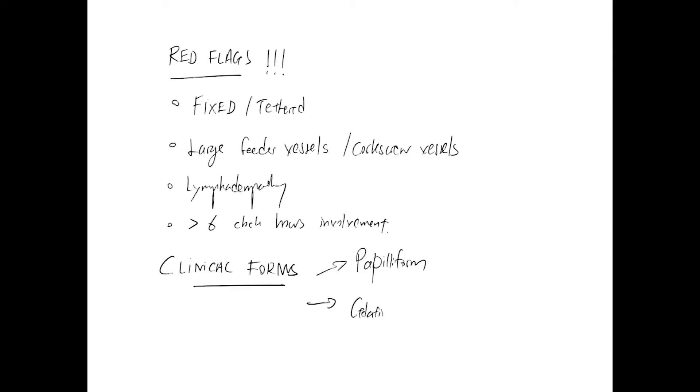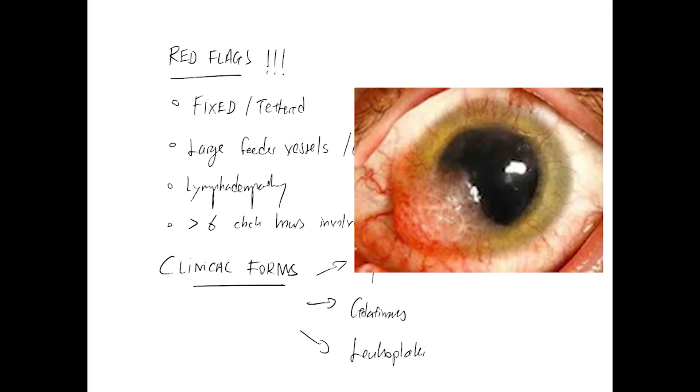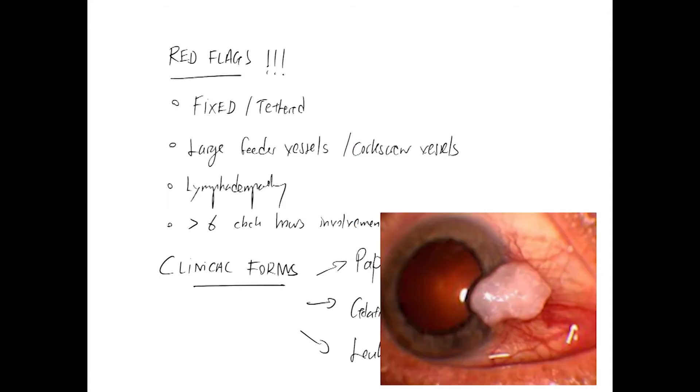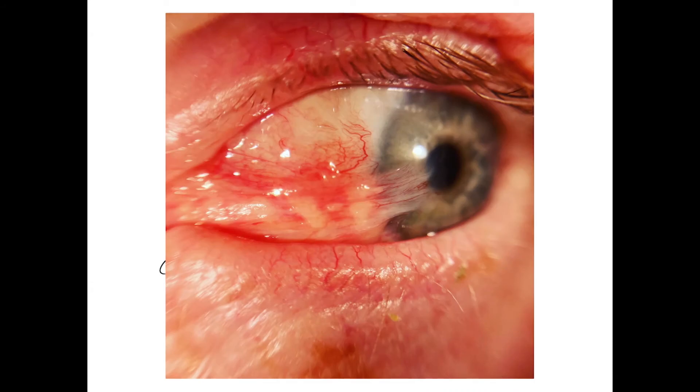There are three clinical forms of OSSN: a papilliform, which you may be able to see in this picture here. I haven't got a picture of a gelatinous, but this one here shows leukoplakia, and this is another one of leukoplakia and pterygium.